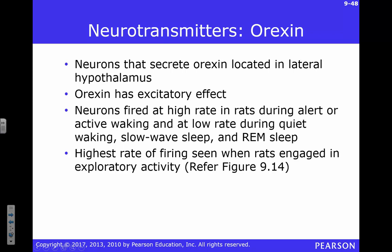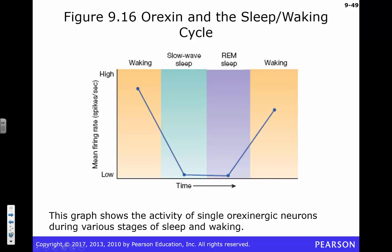The last neurotransmitter to discuss is orexin, probably one of the more important ones because of its unique control mechanism in the flip-flop circuit. Orexin is excitatory — it has an excitatory effect on the brain regions where it's released. In rats, orexinergic cells have a high firing rate while awake and drop in activity during sleep, including during REM sleep. A clear pattern: high orexin while awake, low orexin while asleep.